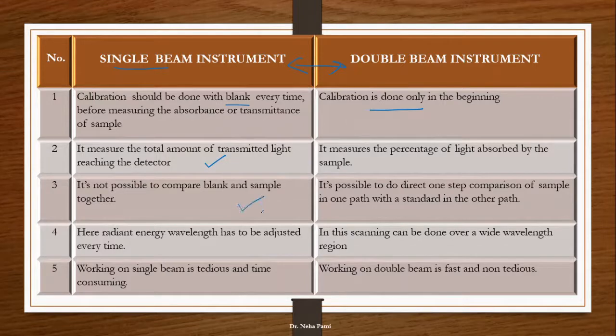Single beam measures the total amount of transmitted light reaching the detector, while double beam measures the percentage of light absorbed by the sample. It's not possible to compare blank and sample together in single beam - you have single cuvette, so first you have to run blank, then run sample one by one. While in double beam you can do one-step comparison because you have two cuvettes and two beams together. In single beam, radiant energy wavelength has to be adjusted every time. In double beam, scanning can be done over a wide wavelength region. The monochromator, beam splitter, and mirror help in doing that.